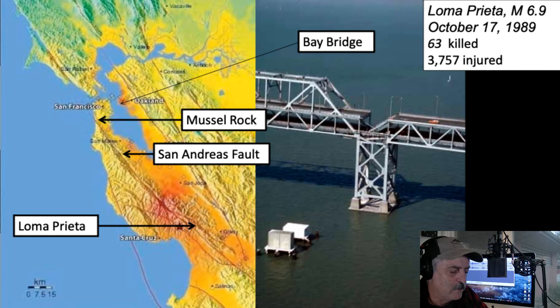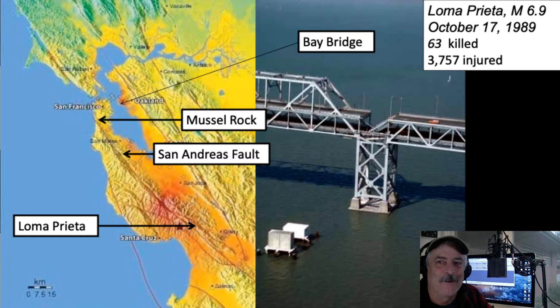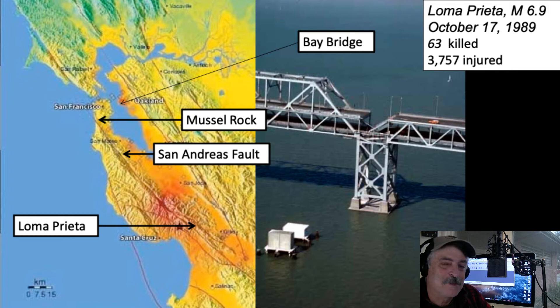The Bay Bridge is one of the major transit hubs for people who work in the city but live in the East Bay. There were only 63 people killed — a miracle — but almost 4,000 were injured. If you watch ESPN, you may be familiar with the 30 for 30 series; there's one about this event along with several other documentaries.